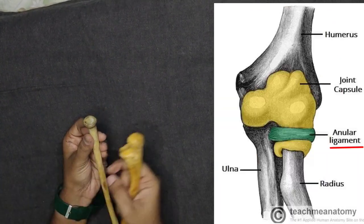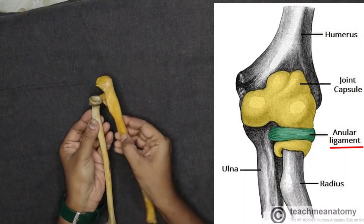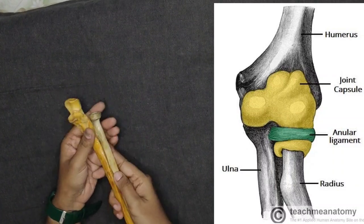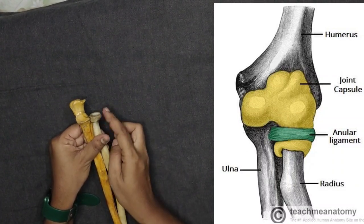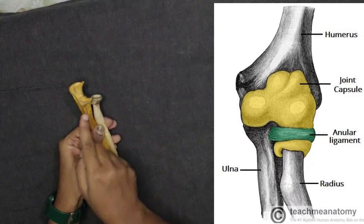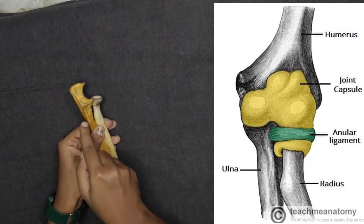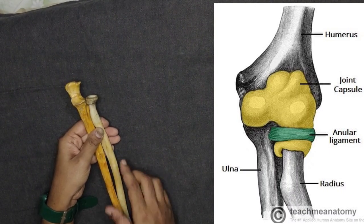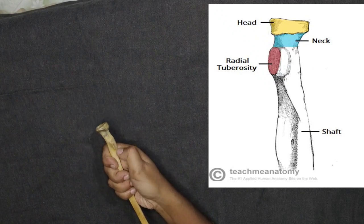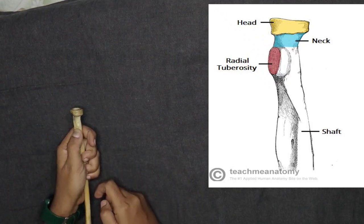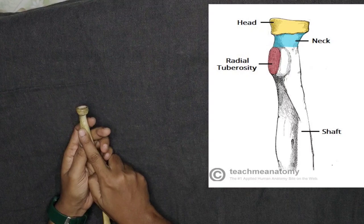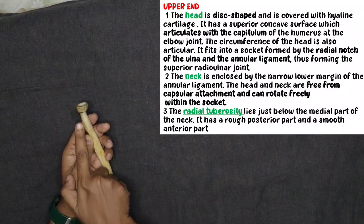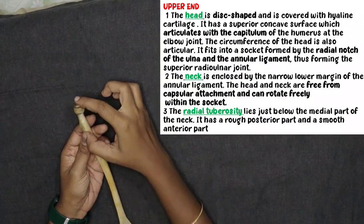Coming to the neck of the radius: the neck is attached with the help of a ligament called the annular ligament. The annular ligament holds the head and neck of the radius in place. Below the neck is the radial tuberosity, where the anterior part is smooth and the posterior part is rough.